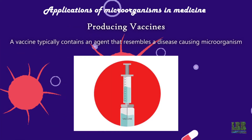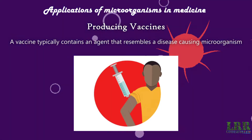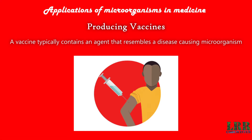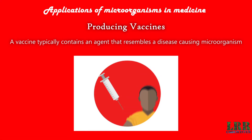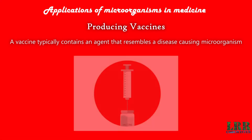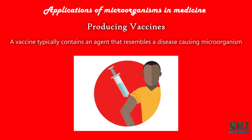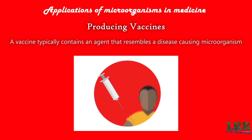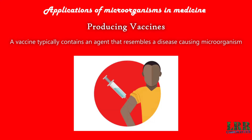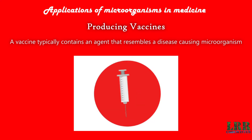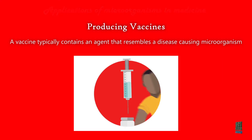Producing vaccines: a vaccine contains an agent that resembles a disease-causing microorganism. Vaccines are often made from weakened or killed forms of microbes, and also using the toxins and body parts of them.